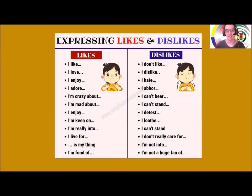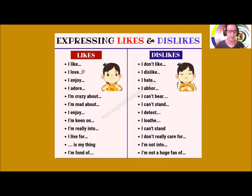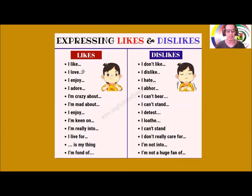So, expressing likes and dislikes — expresar las cosas que te gustan o no te gustan. For likes we can say: I like, I love, I enjoy, I adore, I'm crazy about, I'm mad about, I'm keen on, I'm really into, I live for.